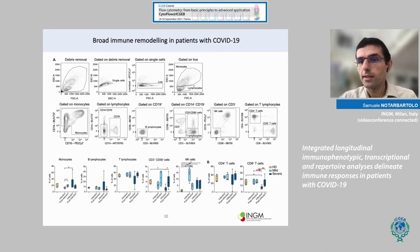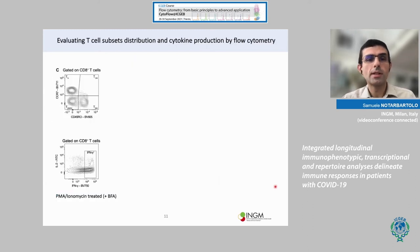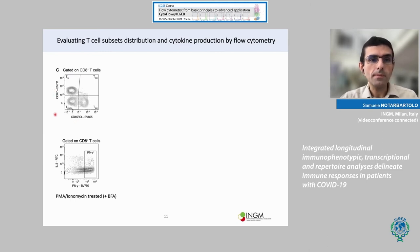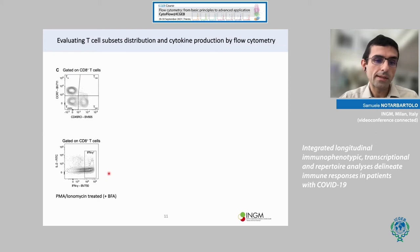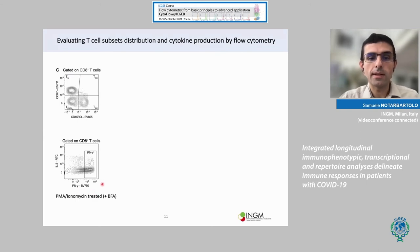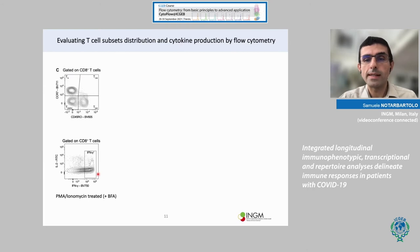Since CD8 lymphocytes were shown to be the most affected population in patients with severe disease, we focused on this population. Based on combinatorial staining of CD45RO and CCR7, we could identify subpopulations like naïve, central memory, effector memory, and terminally differentiated T cells. Moreover, using intracellular cytokine staining on cells stimulated with PMA/ionomycin — strong stimuli to activate signaling downstream of the TCR — we could also evaluate interferon-gamma production, essentially the effector capacity of these cells.